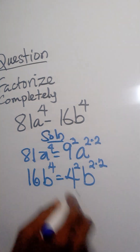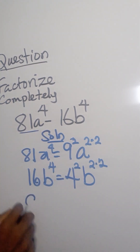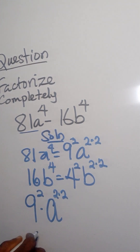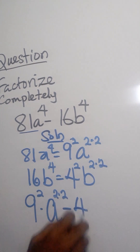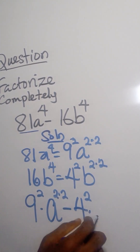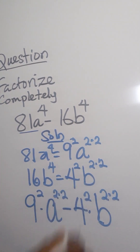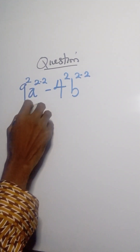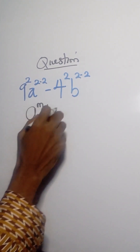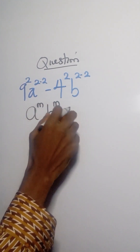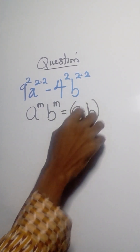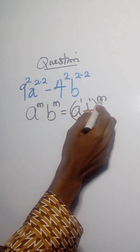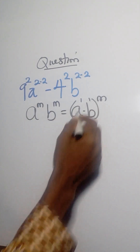I'm going to substitute such that this becomes 9 squared times a raised to the power of 2 times 2, minus 4 squared times b raised to the power of 2 times 2. From this I can recognize a law of indices: if we have a raised to the power of n times b raised to the power of n, since they are the same index, we can factor out the power of n.